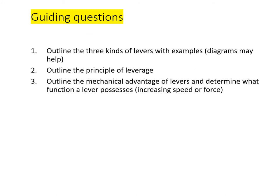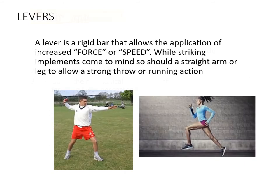The guiding questions require quite a bit of work to understand the components of levers and to distinguish between the three different classes, with examples from everyday life and sport. Textbooks define levers as rigid bars with three fundamental components: an axis or pivot point, a place where force is applied, and a resistance to overcome. Depending on how they are structured, a lever can help generate greater force or greater speed.